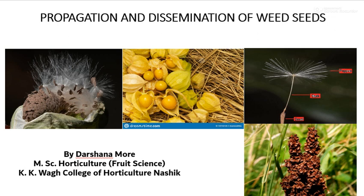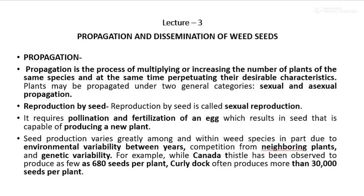In this topic we will see the dissemination and propagation of weed. Propagation means multiplication of a plant. It is the process of multiplying or increasing the number of plants of the same species, while at the same time perpetuating their desirable characteristics. Plants may be propagated under two categories: sexual and asexual propagation.